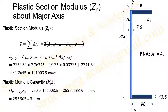Note: the factor of 2 appearing in one equation on screen is a carry-over from the previous major-axis equation and should be ignored for the YY calculation. The plastic section modulus Zp_yy is the summation of each area segment multiplied by its respective centroid distance from the PNA, considering all three segments. This gives Zp_yy = 101,003.5 mm³, and the plastic moment capacity fy × Zp = 250 × 101,003.5 = 25.25 kN·m.